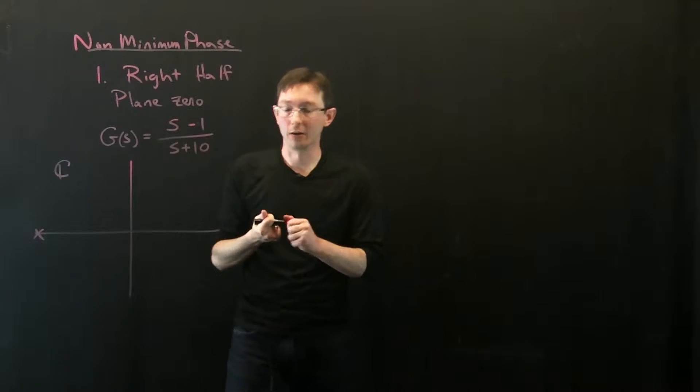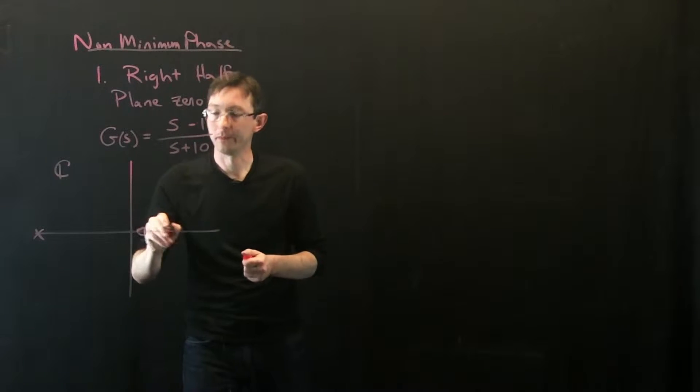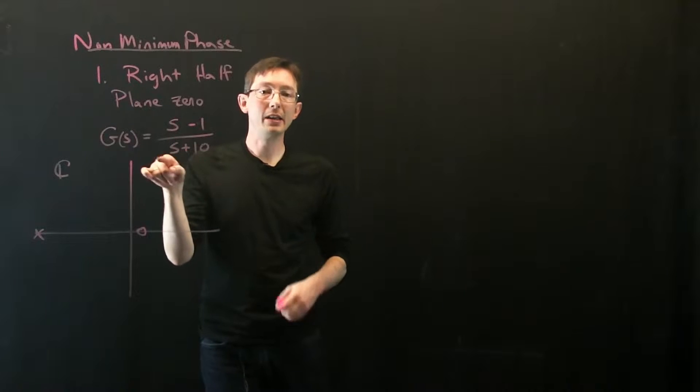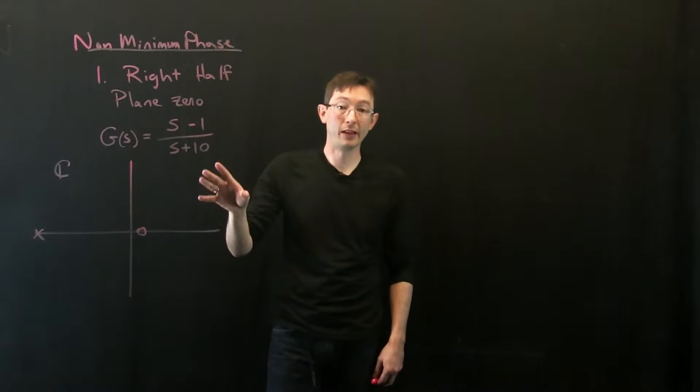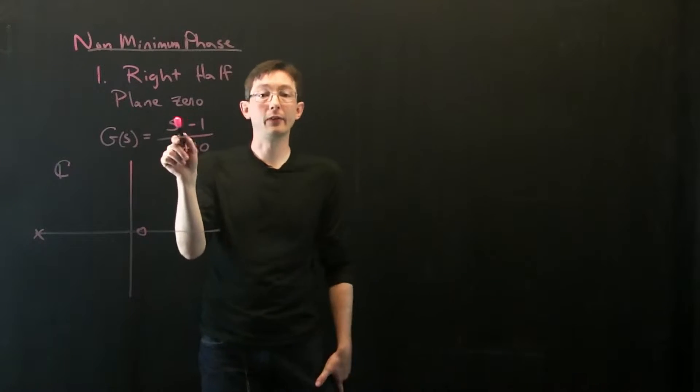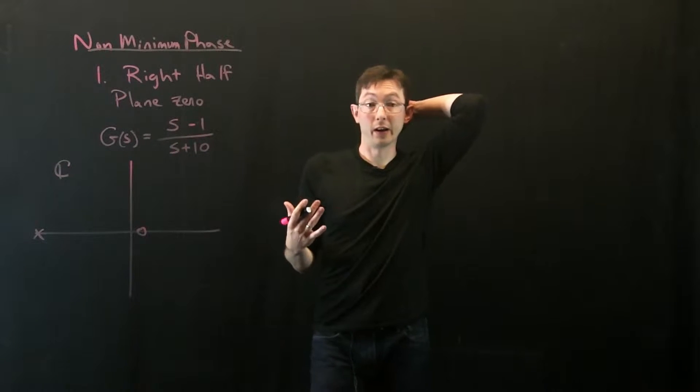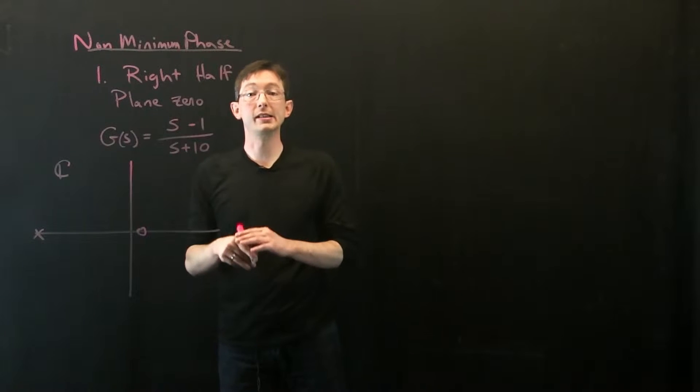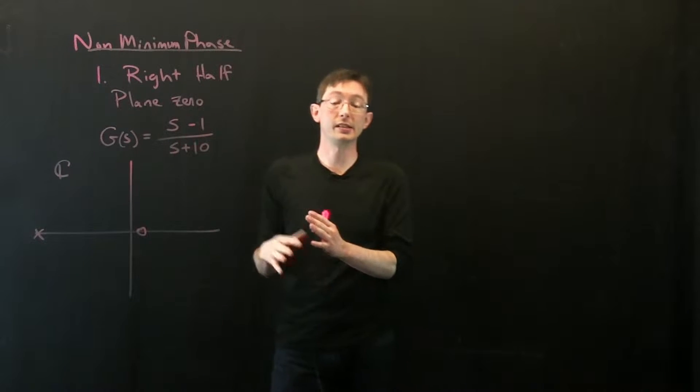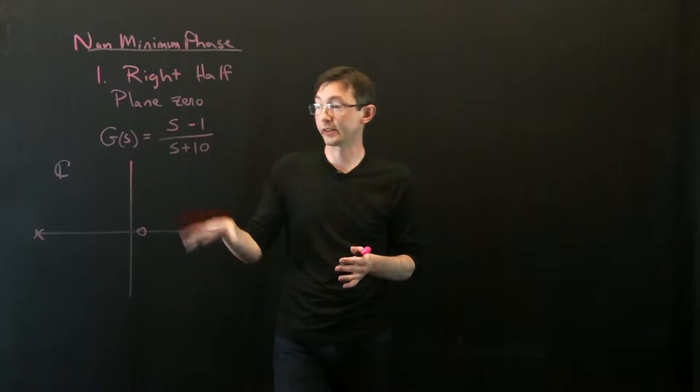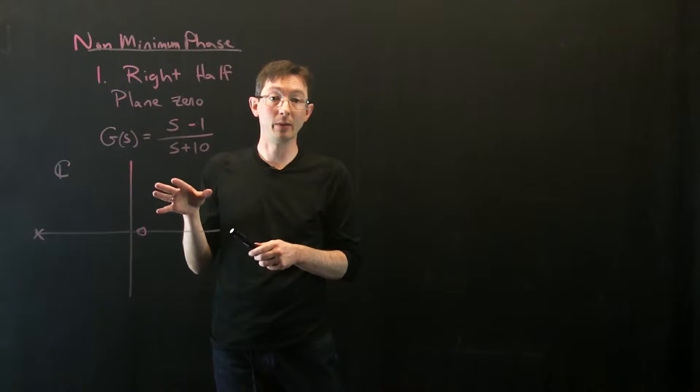But the zero is at plus 1. This is my zero at plus 1, that makes the system non-minimum phase. Okay, so anytime you have a right half plane zero, you should be worrying that your system is non-minimum phase and that's going to have fundamental limits on the robustness of your system and what you can do with control.